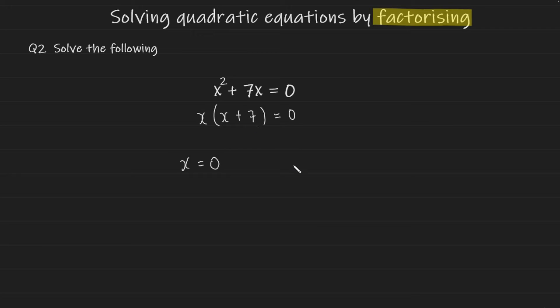And we're going to take this bracket x plus 7 and equal it to 0. Now we have to rearrange for x so I'm going to take away 7 from both sides. And this leaves us with x is equal to negative 7 which is our second solution.